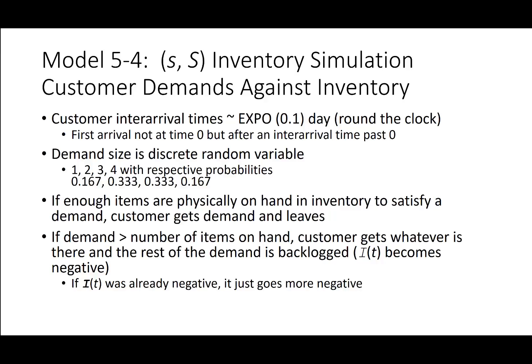If enough items are on hand to satisfy demand, the customer gets the demand and leaves. If demand exceeds inventory, the customer gets what is available and the rest is backlogged — inventory shows as negative. If inventory is already negative and more demand arrives, it becomes more negative, showing a greater backlog.